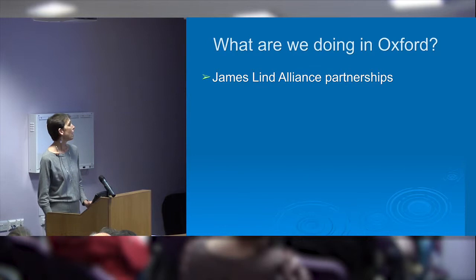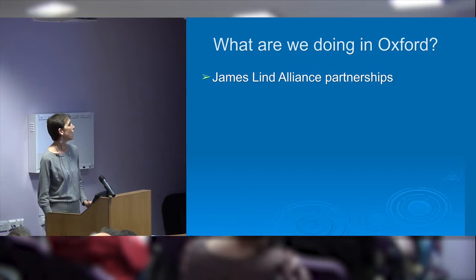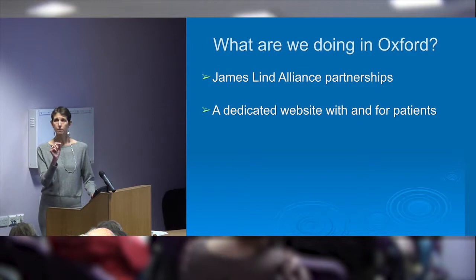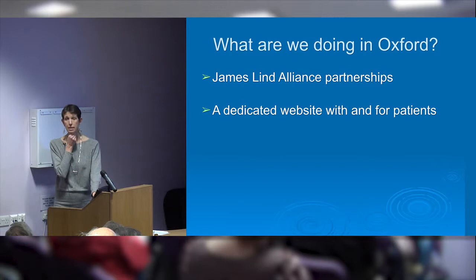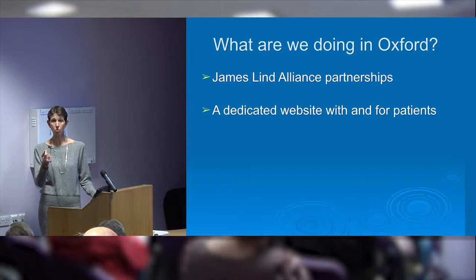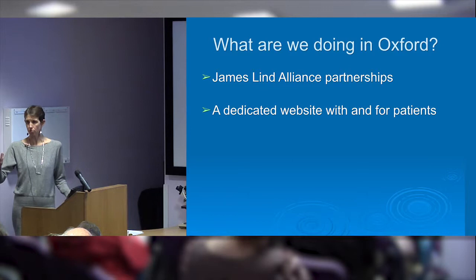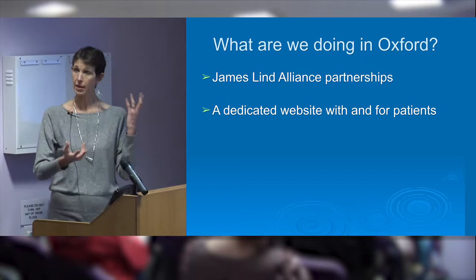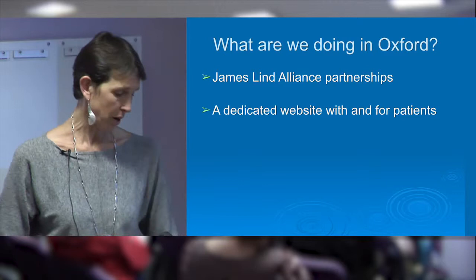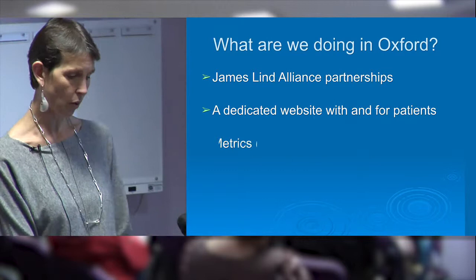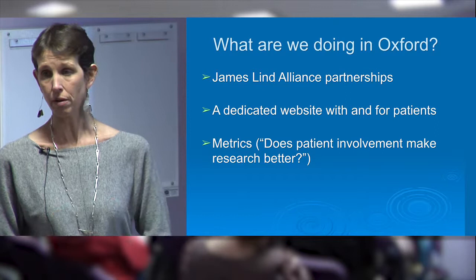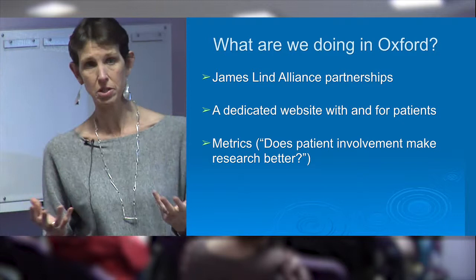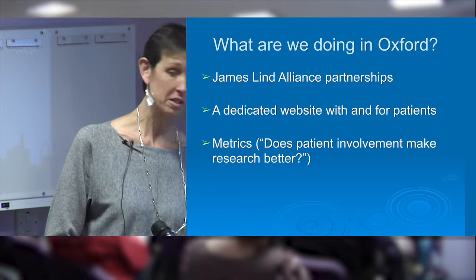Our three-stranded plan - actually a three-and-a-bit stranded plan - includes James Lind Alliance partnerships, a dedicated website with and for patients, and work on metrics. I mentioned the importance earlier of doing an audit about who's doing what PPI here in Oxford. The website we're setting up is a place where we're hoping to essentially matchmake research teams wanting to involve patients with patients who want to get involved. The third strand is around metrics - measuring whether patient involvement makes research better. To me, that's the core question. We shouldn't be doing it if it doesn't work, but the definitions of 'work' and the ways to measure it are extremely complex.